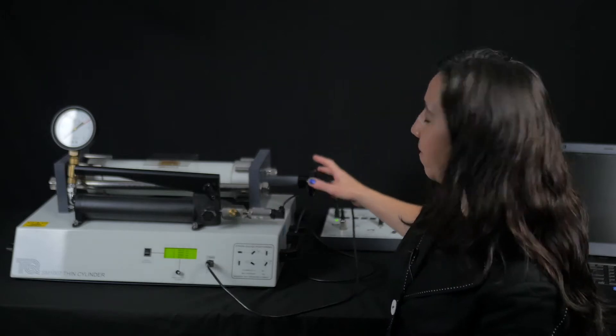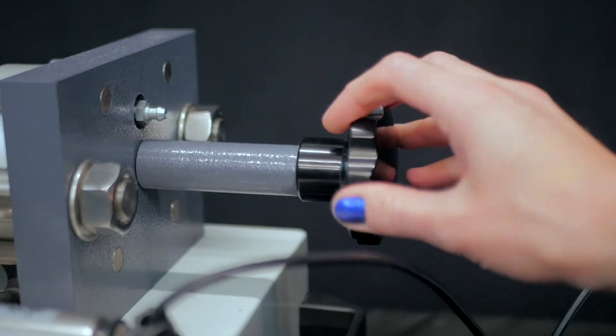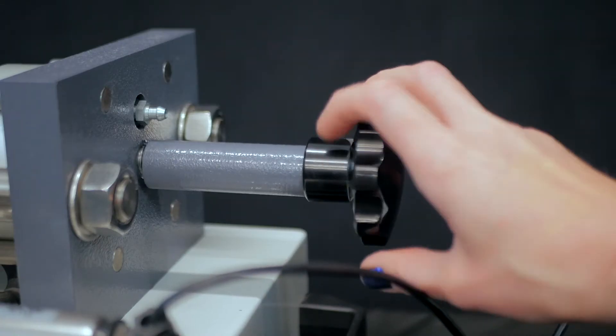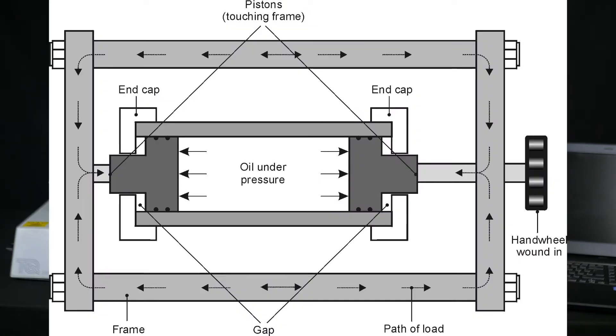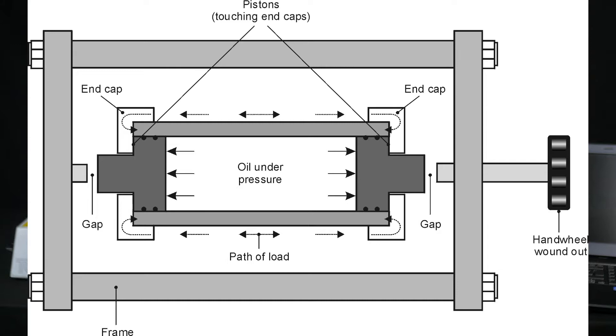A hand wheel at the end of the frame sets the cylinder for open and closed-end experiments. You can see on this diagram where the stress occurs for open-end conditions and then for closed-end conditions. There are multiple strain gauges fixed to the wall's surface.